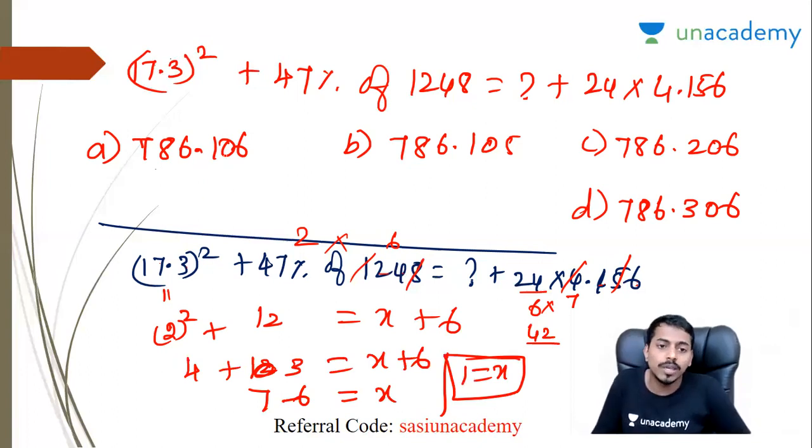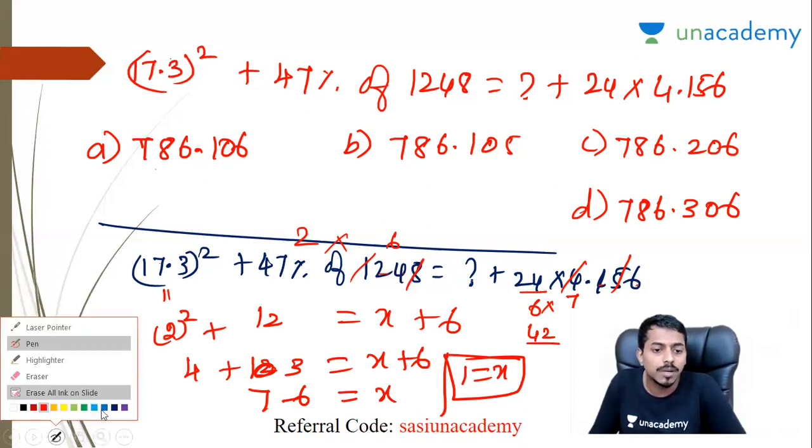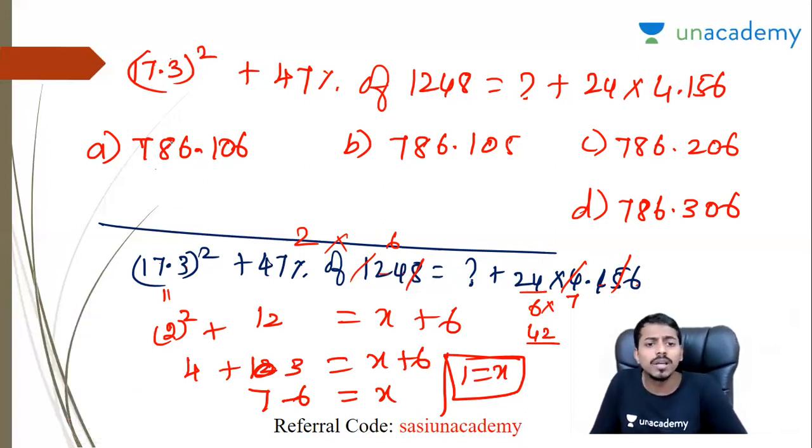So you can solve it. 8 plus 1, 9 cancel. Next one, that is 6 plus 6, 12, 12 plus 7, 19. So condition satisfied. 6 plus 6, 12, 12 plus 7, 19. And 19, 9 cancel, 1 remains. So the first option is right.